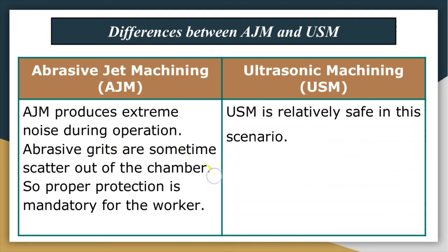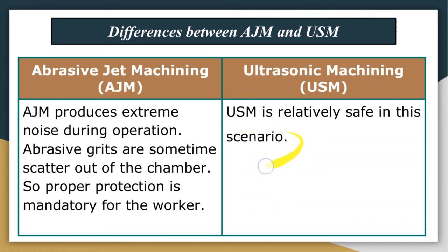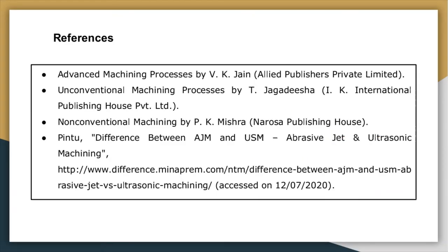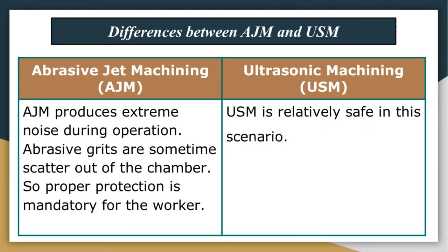Abrasive jet machining produces extreme noise during operation, and abrasive particles sometimes scatter out of the chamber during working, so proper protection is required for the worker. In contrast, ultrasonic machining is relatively safer in this regard. These are the key differences between abrasive jet machining and ultrasonic machining.